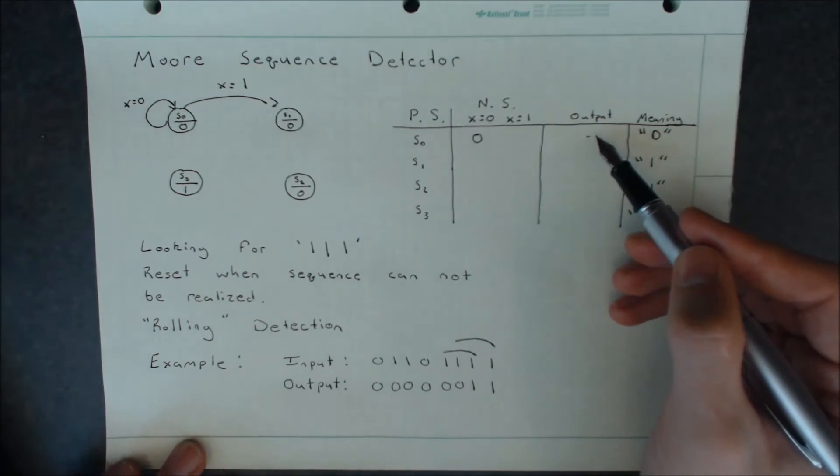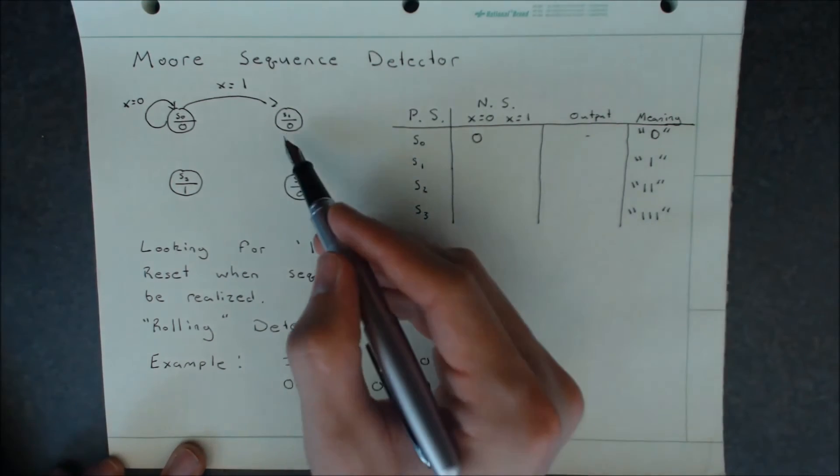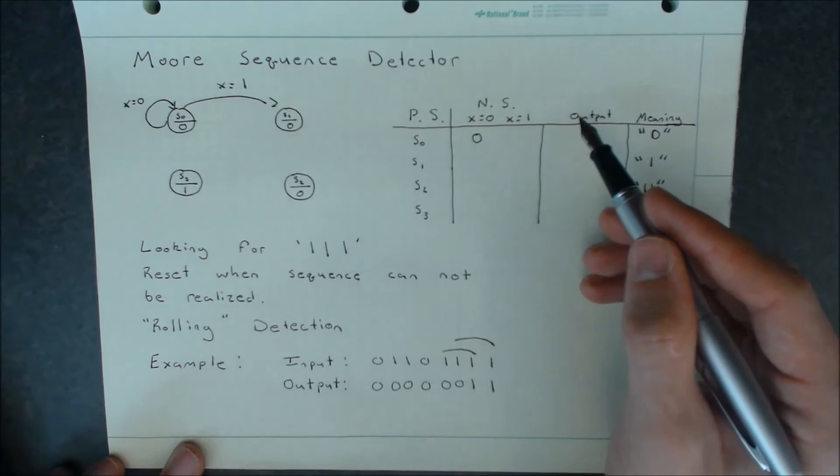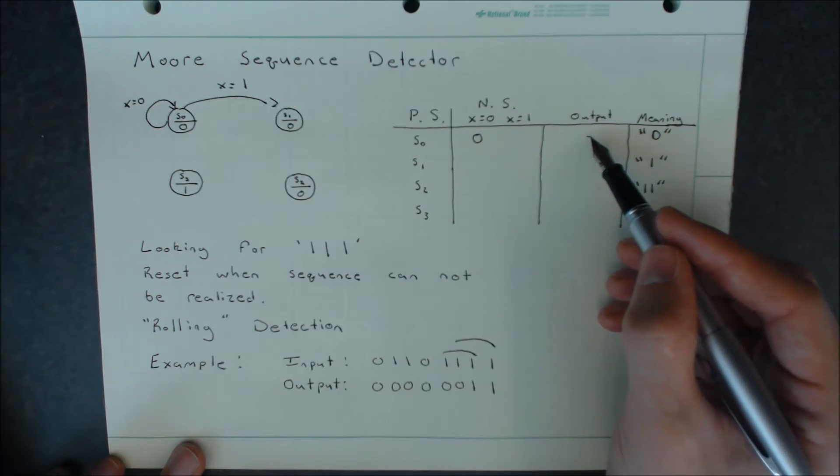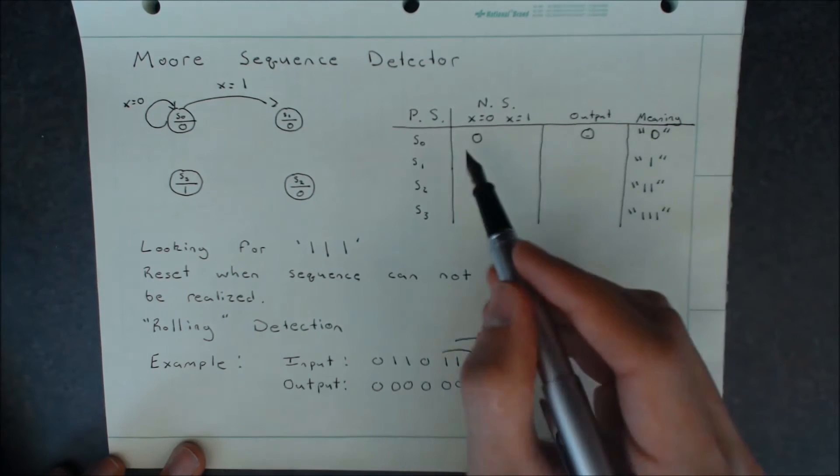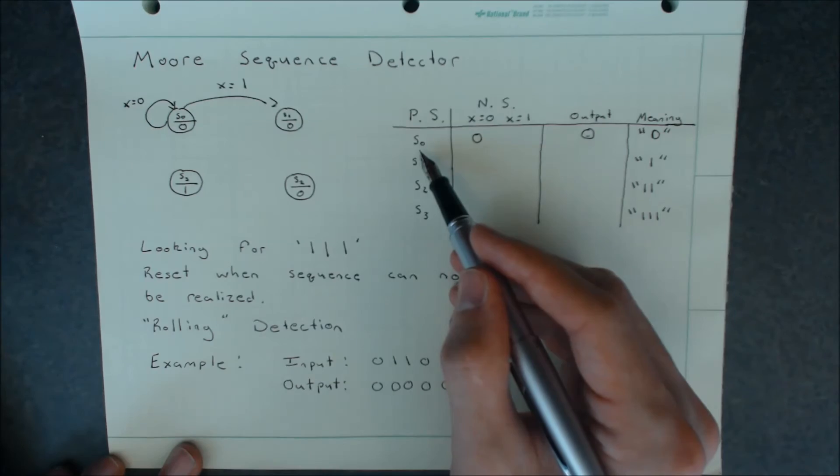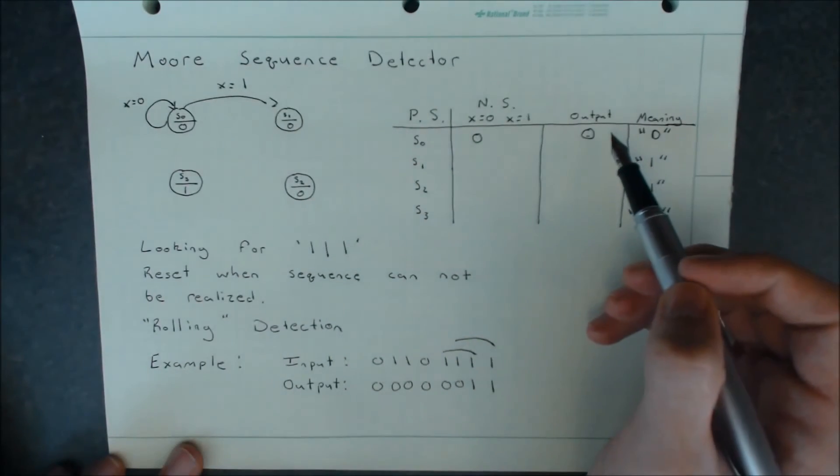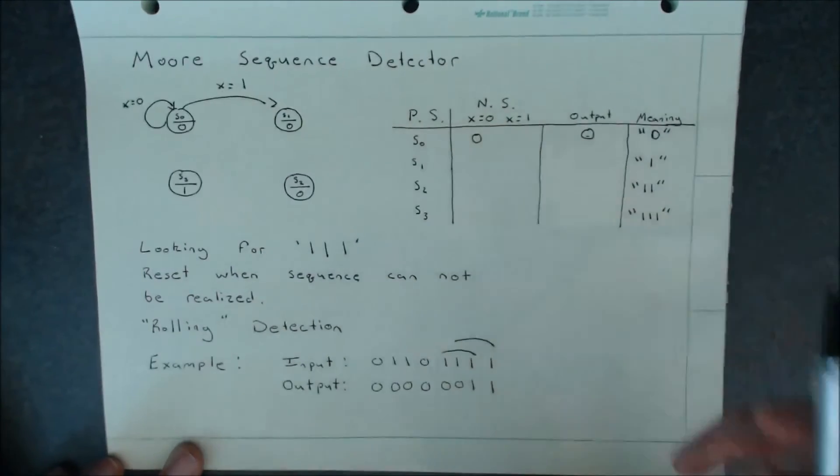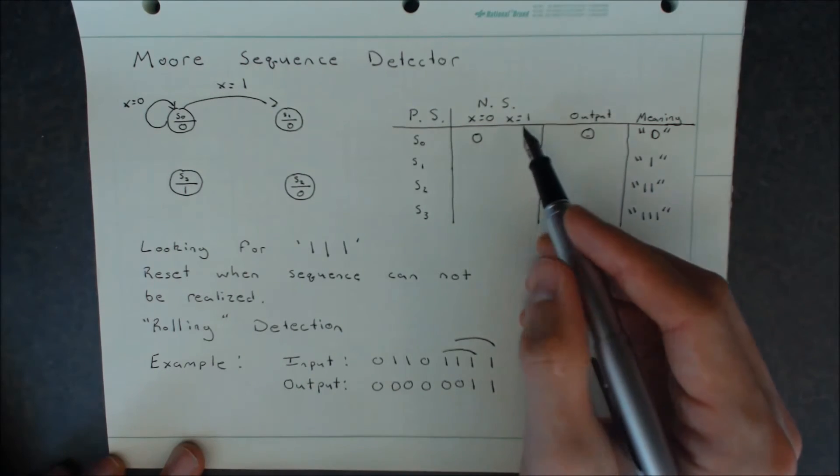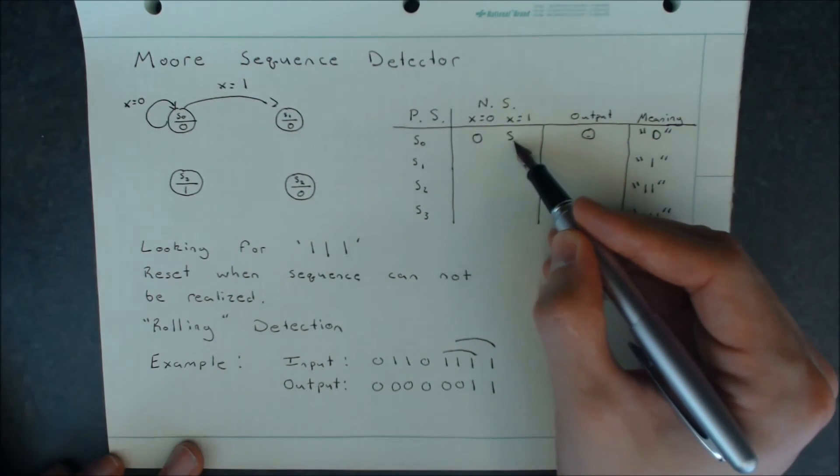And for output, we'll simply use the output of the state that we've reached. In this case, the output is going to be a 0. Or rather, the output will be the state that we're presently in, this S0 state. And then on x equals 1, we'll change to S1.